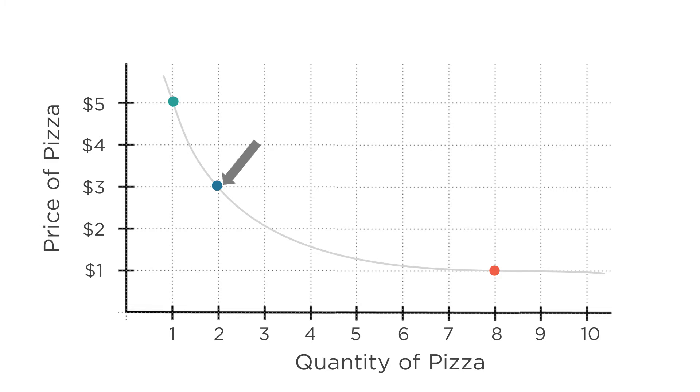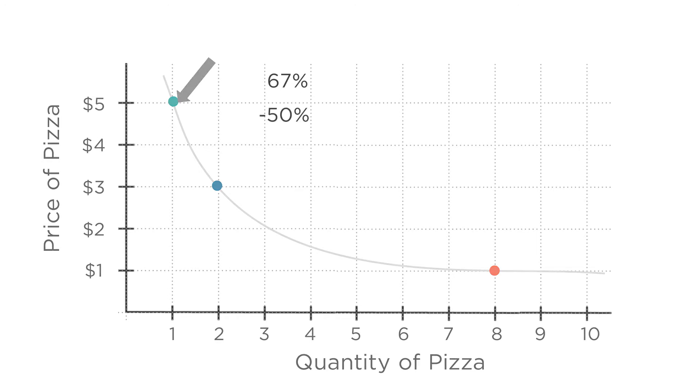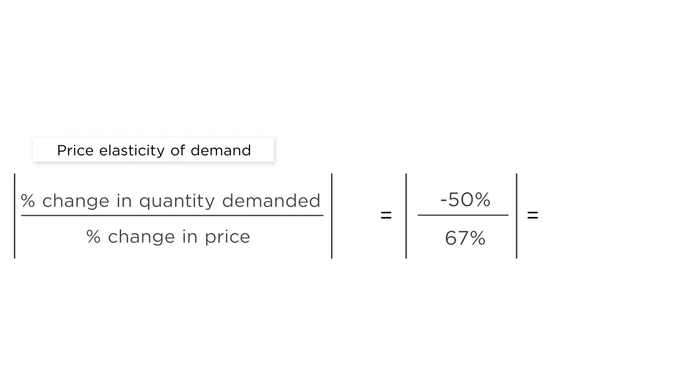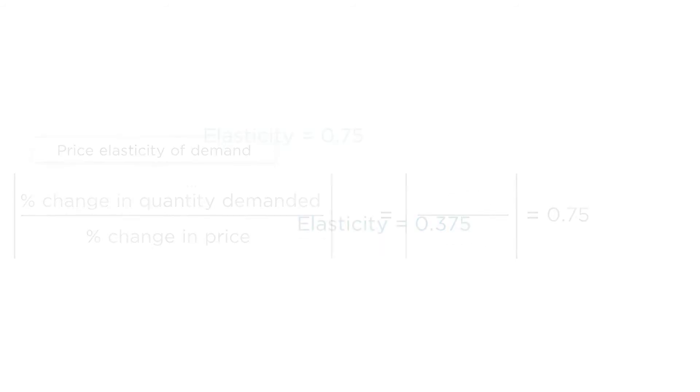When the price of pizza goes from $3 to $5, an increase of roughly 67%, demand falls from two slices to one slice, a decrease of 50%. The price elasticity of demand at this point on the demand curve is 50 divided by 67, or 0.75. At this point on the curve, for every 1% increase in price, demand falls by 0.75%.